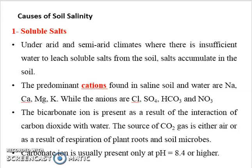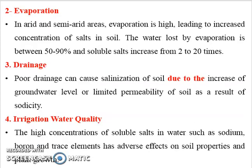Bicarbonate ion is present as a result of the interaction of carbon dioxide with water. The source of carbon dioxide gas is either air or the result of respiration of plant roots and microbes, which react with water to produce bicarbonate. The bicarbonate usually raises the pH to 8.5 or higher. So the first cause of soil salinity is soluble salt present in soil under arid and semi-arid conditions.